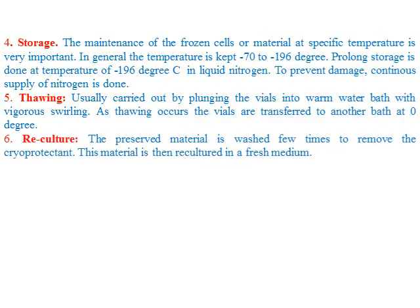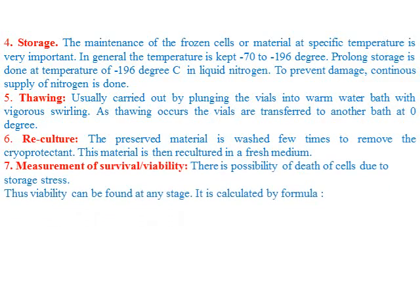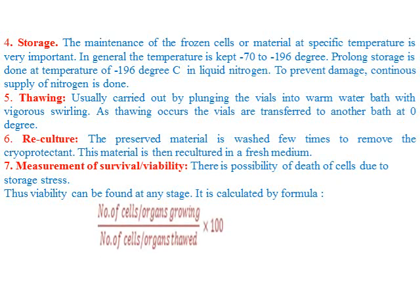The next step is re-culture. To culture the stored tissue, first we wash the germplasm several times with double distilled water. Then we prepare a fresh medium containing all nutrients and plant growth regulators, and grow the cells. There is a technique for measuring viability — how many cells survived. For example, if you started by storing 100 cells at minus 196 degrees Celsius and after one year you want to check viability, the formula is: number of cells/organs growing divided by number of cells/organs thawed — multiplied by 100. If 80 cells survive out of 100, that is your viability percentage.